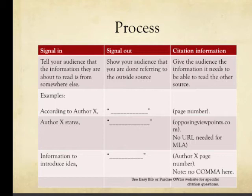The process of MLA documentation is basically this: you need to signal in to let your audience know that the information they're about to read is from somewhere else. You need to signal out by showing your audience that you're done referring to the outside source. And then you need to give your audience the citation information so they can go and read that same source.